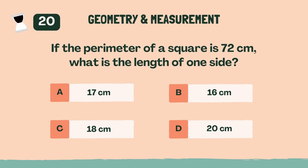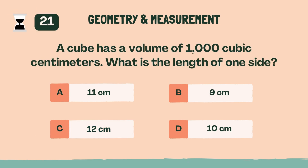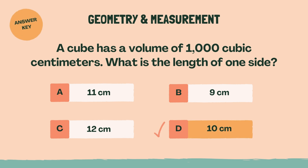If the perimeter of a square is 72 centimeters, what is the length of one side? The answer is D, 10 centimeters.